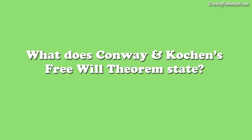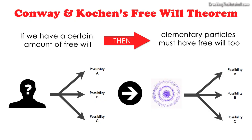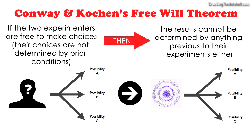So what does Conway and Kochen's free will theorem state? The theorem states that if we assume that we have a certain amount of free will, then, subject to certain other assumptions, elementary particles must have free will too. Put another way, given certain other axioms, if the two experimenters are free to make choices about what measurements they are going to make — that is, if their choices are not determined by prior conditions in the universe — then the results of their measurements cannot be determined by anything previous to their experiments either.